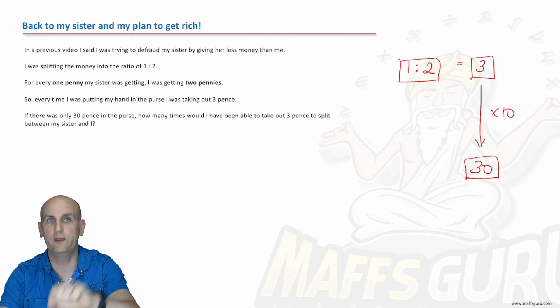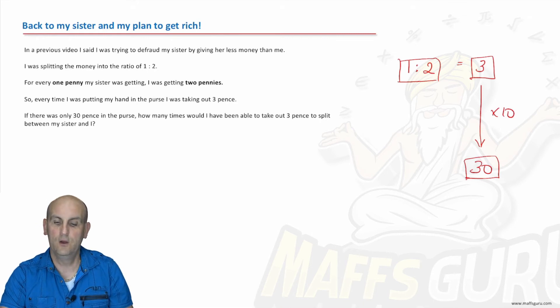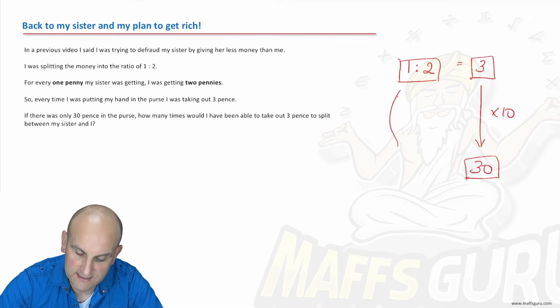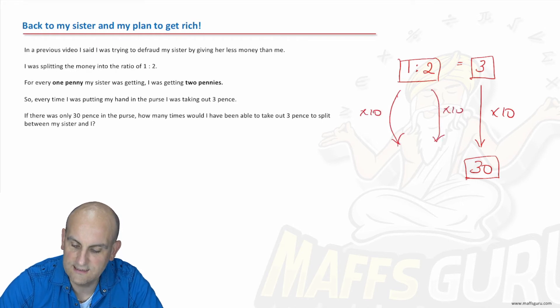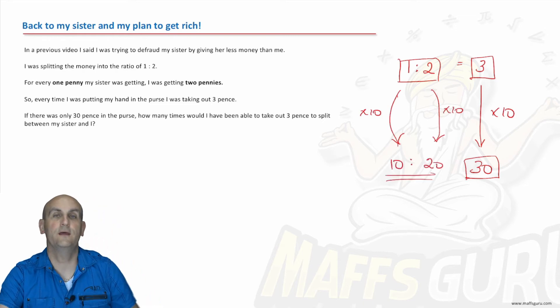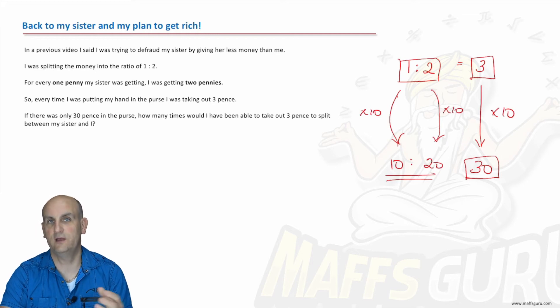Well if I'm going to do it 10 times, that means that my sister will get 10 times one pence, and I will get 10 times two pence. So she'll get 10 pence and I'll get 20 pence, and what do you notice, when they are together they give me the 30 pence I need.